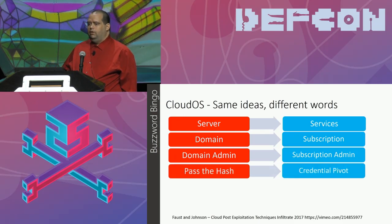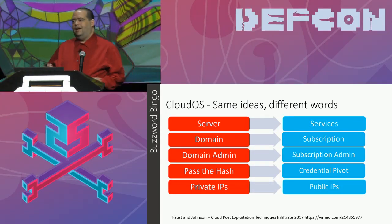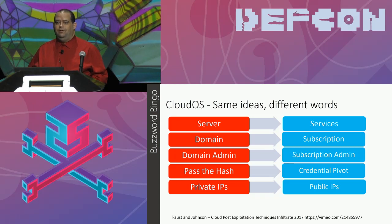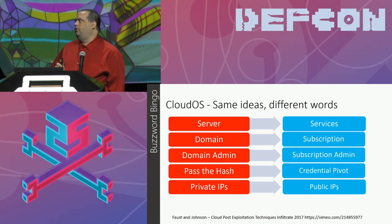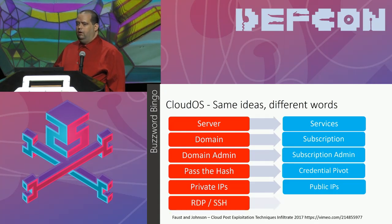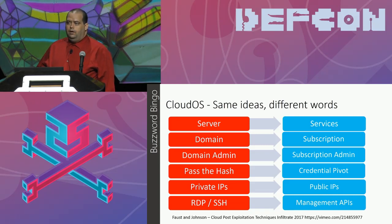Rather than passing hashes, we're looking for credential pivots — there are many different types of credentials to consider. Rather than private IPs, we have public IPs. It's like NAT had never been invented — awesome for attackers, not so great for defenders. Things are just open to the public because that's where they're designed to be. They do implement VPNs, but in many cases what you're after is a lot more accessible than it would be tucked into a well-protected data center. Rather than RDP and SSH, you're generally dealing with management APIs where you make requests to the service to do something on your behalf.